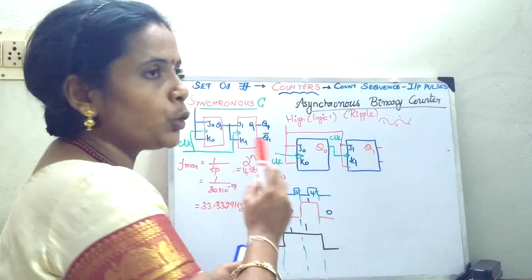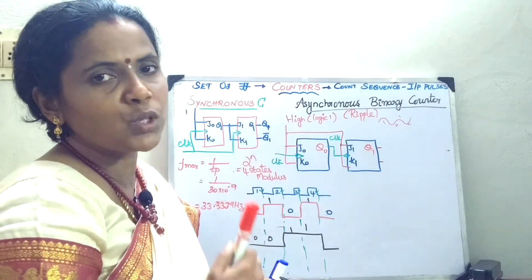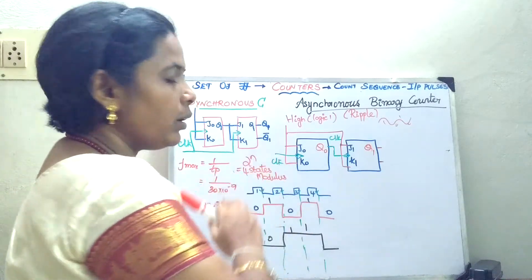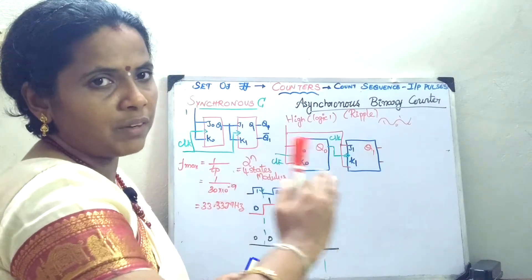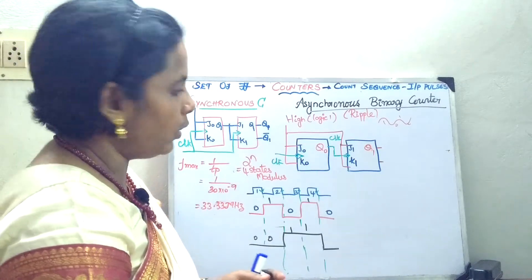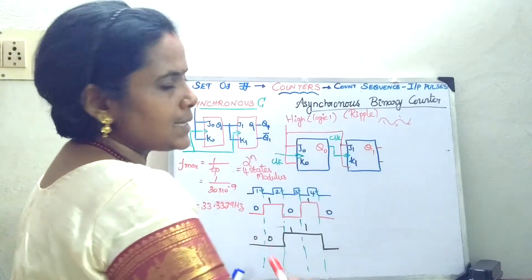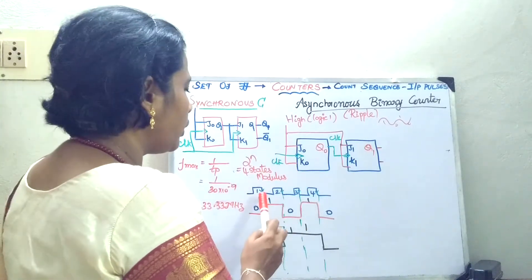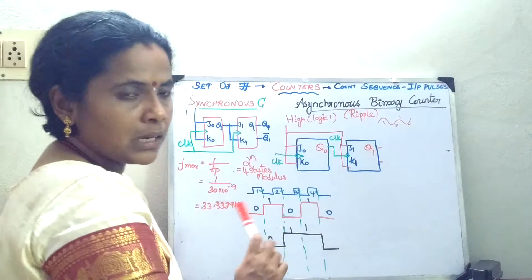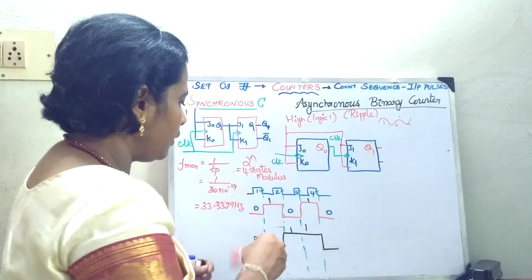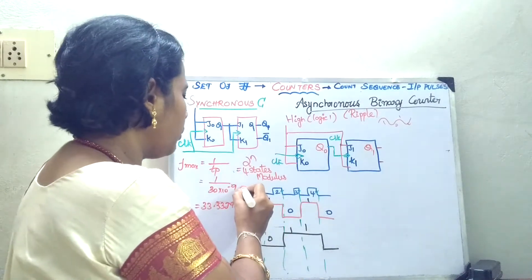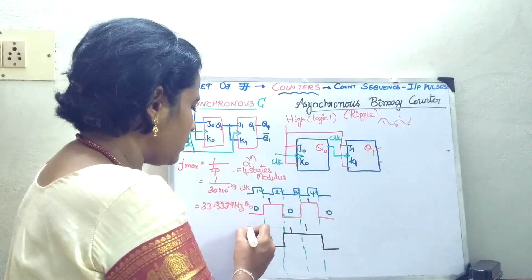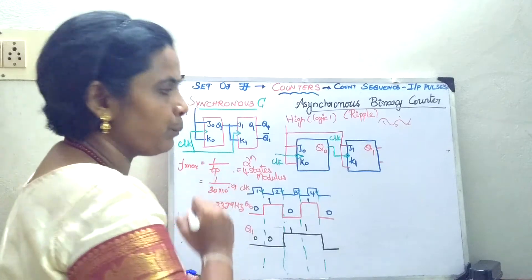Suppose it is going to be 2 power 3 — then it will be counting 8 states from 0 to 7, so it is a mod-8 counter. Now we will see the working of it and analyze its timing diagram. I am going to give 4 clock pulses. I have drawn the clock waveform — this is going to be my clock, this is going to be my Q-naught, and this is going to be my Q1.